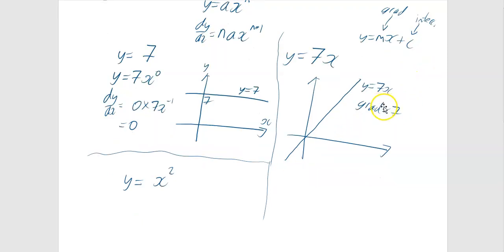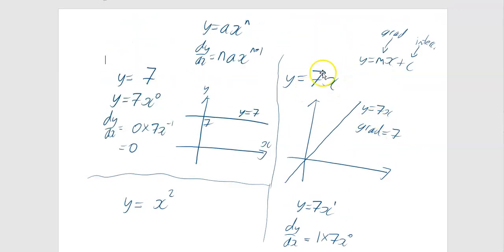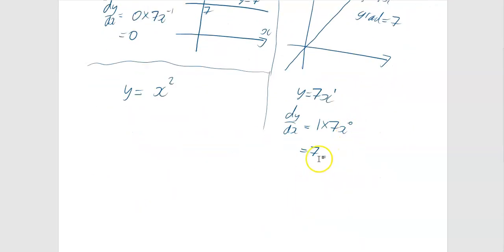Let's see if that works when we actually differentiate. y equals 7x — give that x a power of 1. Differentiating: dy by dx equals 1 times 7 times x to the power of 0, which is 1 times 7 times 1, which is just 7. So we've shown that differentiating y equals 7x gives you 7.